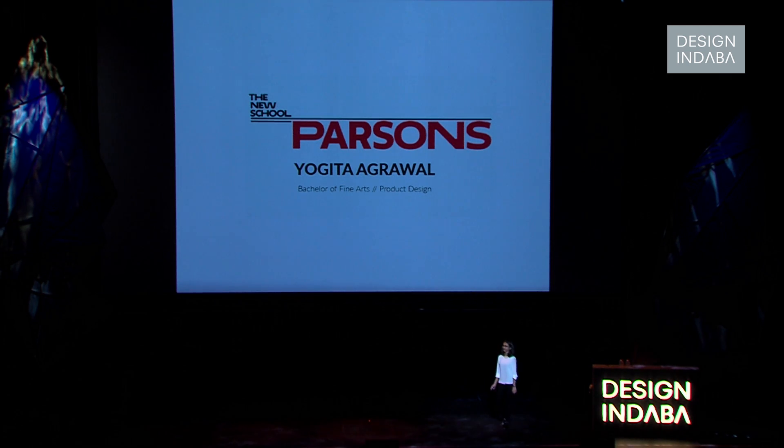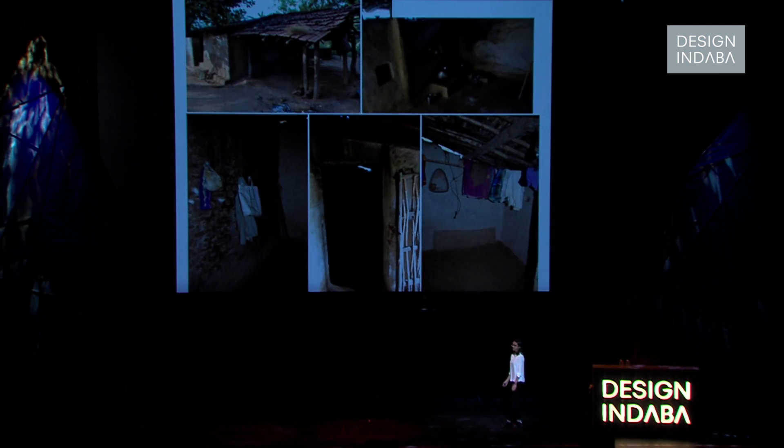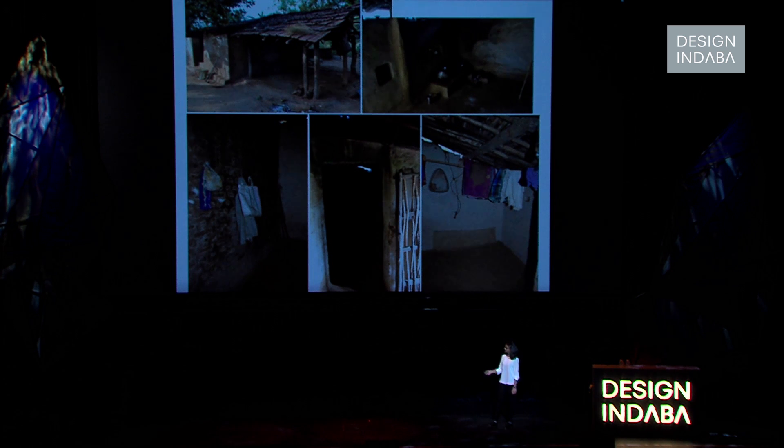So I went down to the communities, and I figured that people live in very simple mud houses. They hardly have doors on their houses, forget locks on their doors, and it's a hassle for them to protect and guard the solar panels on the roofs of the house while they're out and about all day long.